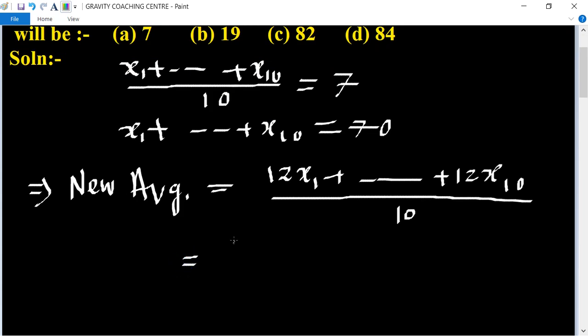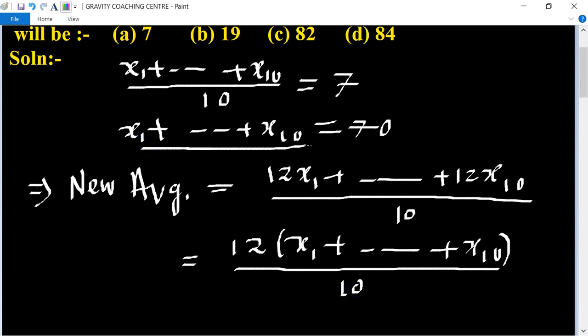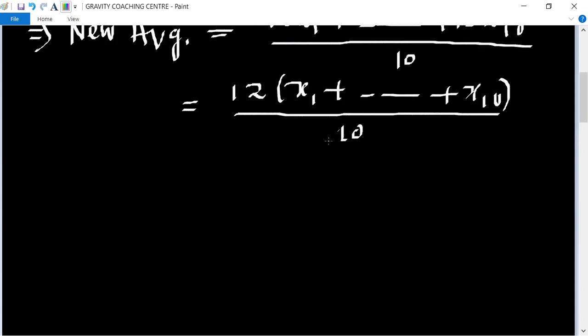We take 12 as common: 12 × (x₁ + x₂ + ... + x₁₀) / 10. The value of x₁ to x₁₀ is 70, so 12